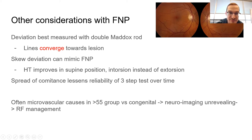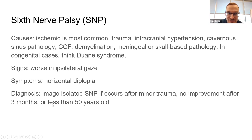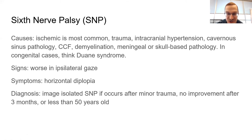For sixth nerve palsies: a nuclear lesion causes a gaze palsy rather than just reduced abduction. Always think about the anatomy and consider other processes causing sixth nerve palsy. If it's congenital, think of Duane syndrome — which can affect abduction, adduction, or both — and you'll also see globe retraction with Duane syndrome.